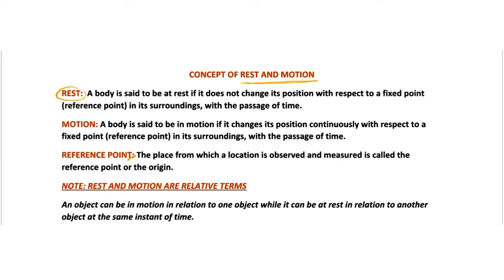How can we say a body or an object is at rest? Let us understand with an example. Suppose you have two bodies, body A and body B. If body B does not change its position with respect to body A — means its surroundings — and with respect to time, then we can say this body B is at rest. If a body does not change its position with respect to its surroundings and time, then we can say the body or an object is at rest.